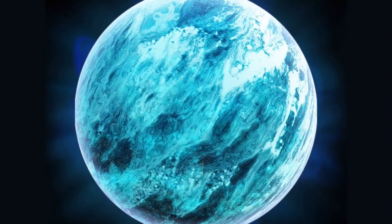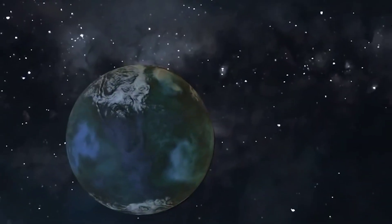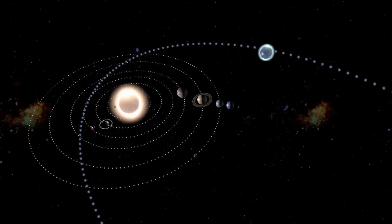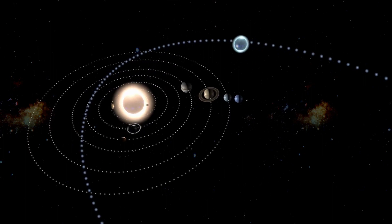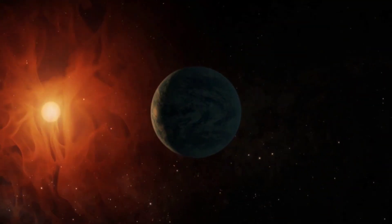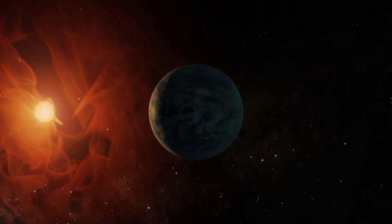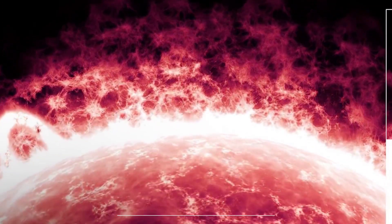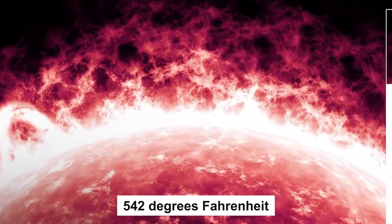Gliese 1214b orbits its own star, a low-mass M-type star, very closely, completing one orbit every 1.58 days. Gliese 1214b's proximity to its host star has caused it to have a very high surface temperature, estimated to be around 281 degrees Celsius, 542 degrees Fahrenheit.